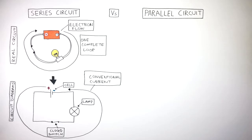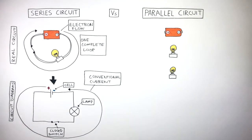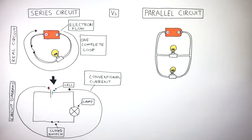We're now going to go through what a parallel circuit is. To start with, we have our cell. Here are two lamps which are connected in parallel to the cell.